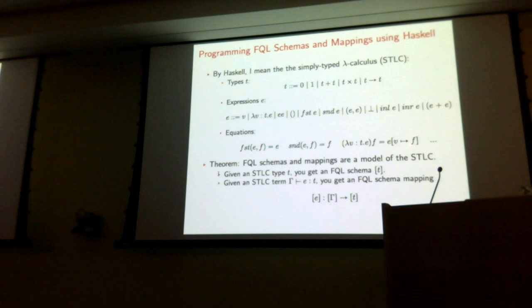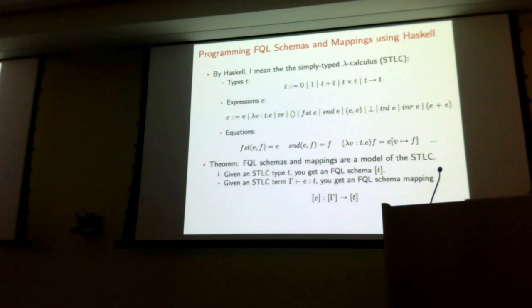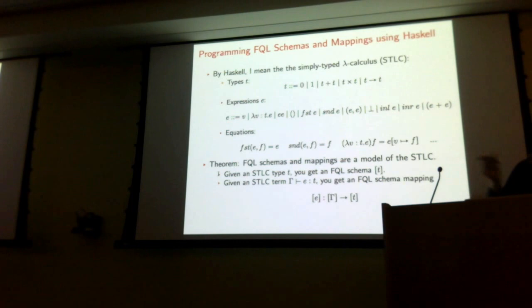Any questions about simply typed lambda calculus? Left versus right — inl versus inr — so inl would take A to A plus B, and inr would take B to A plus B. They're called Left and Right in Haskell — the constructors for Either.